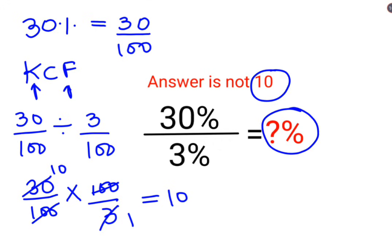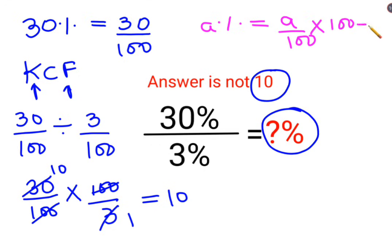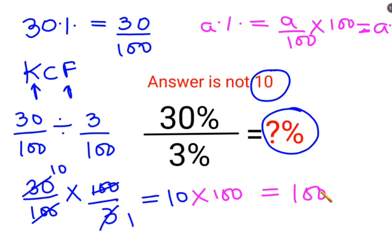Now remember, when they had given us a percent, in order to convert it into a number, you divided by 100. Now, in order to convert it back into a percent, you need to multiply by 100, right? To get it in its percentage form. So here also I need to multiply this 10 with 100 to get it in its percentage form, which comes out to be 1000%.